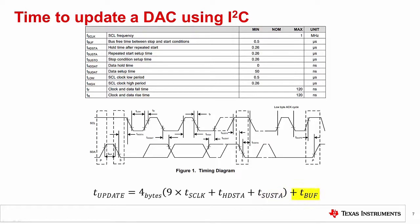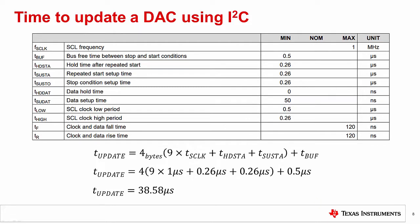Finally, there is a minimum time where the bus must be idle between SPI transactions. By adding these values together, we can calculate the update time for this device is about 38.6 microseconds, or 26 kilo samples per second.